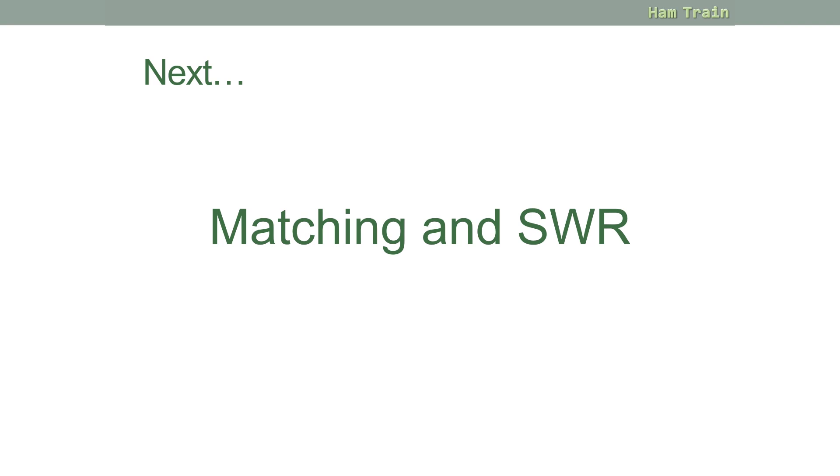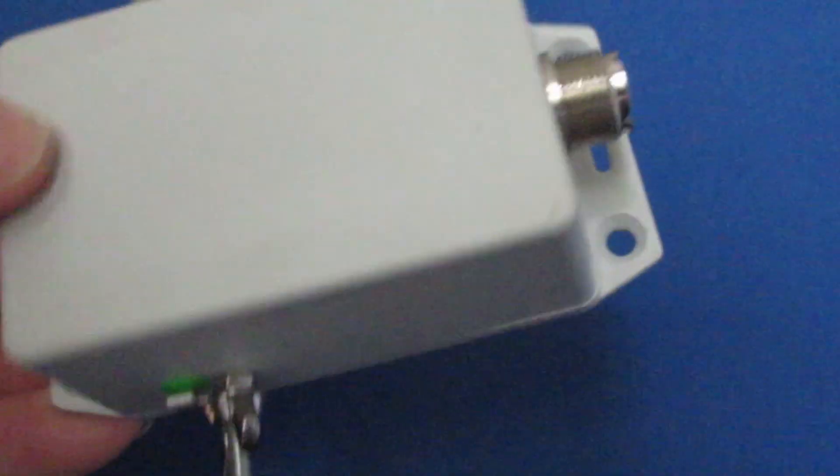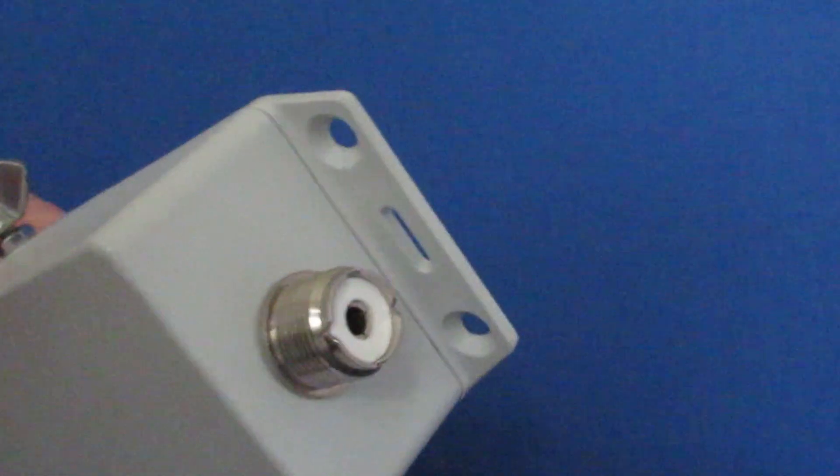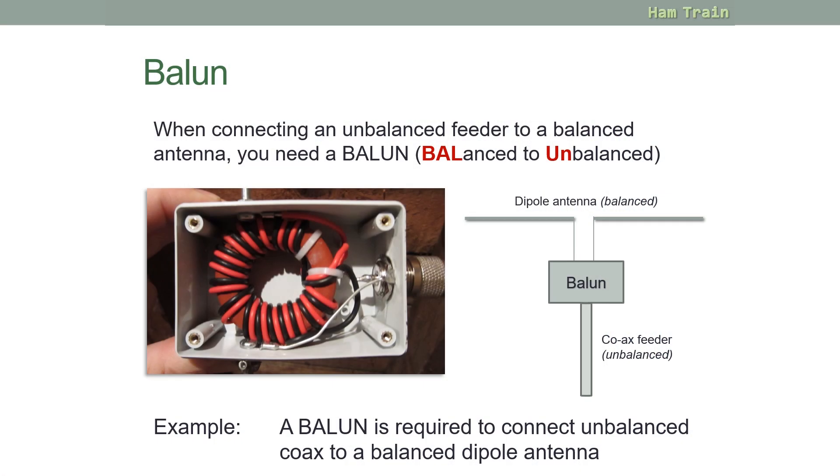And the last part of this module is antenna matching and SWR. Pictured on the screen here is something called a Balun. Now we talked about balanced and unbalanced a little earlier, this should hopefully give it some clarification. So a balanced antenna would be a dipole antenna, which you can see on the screen here. Now typically you may be feeding this with coaxial cable, which is unbalanced. If you're feeding unbalanced coax into a balanced antenna, you need something to adjust the balance in the middle, which is called a Balun. This is balanced to unbalanced. So to connect a dipole using coax, you would need a Balun in place between the antenna and the coax.